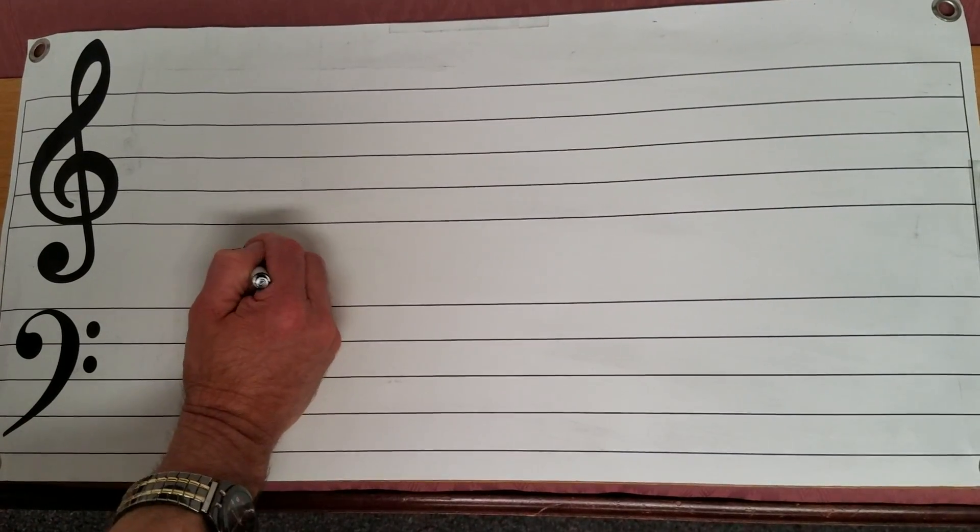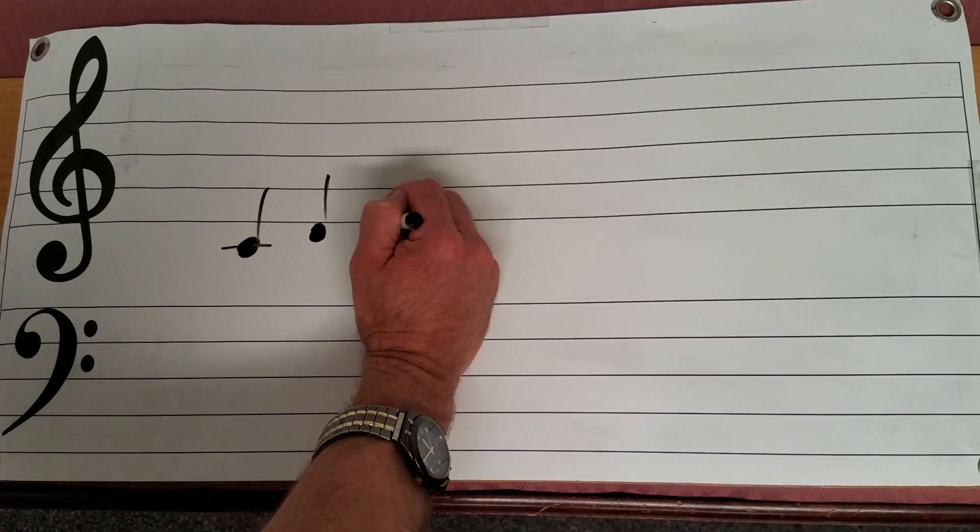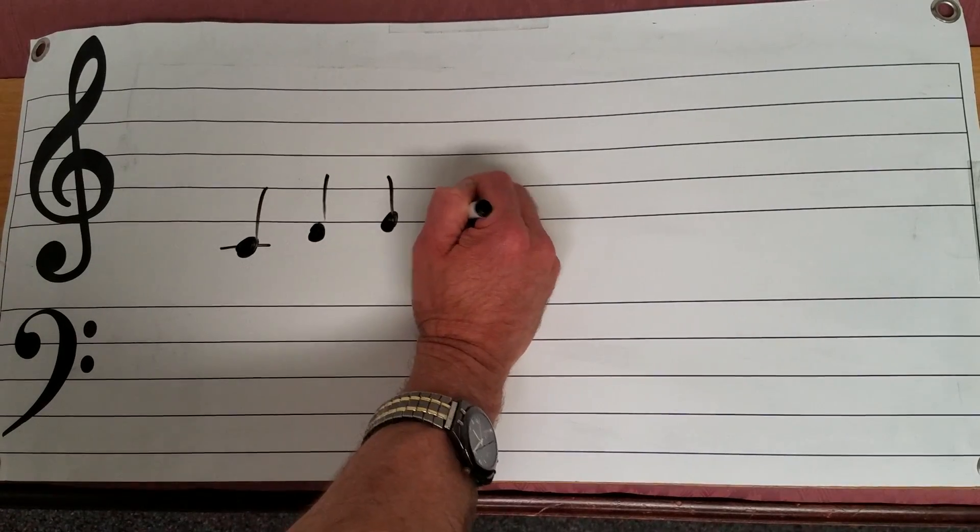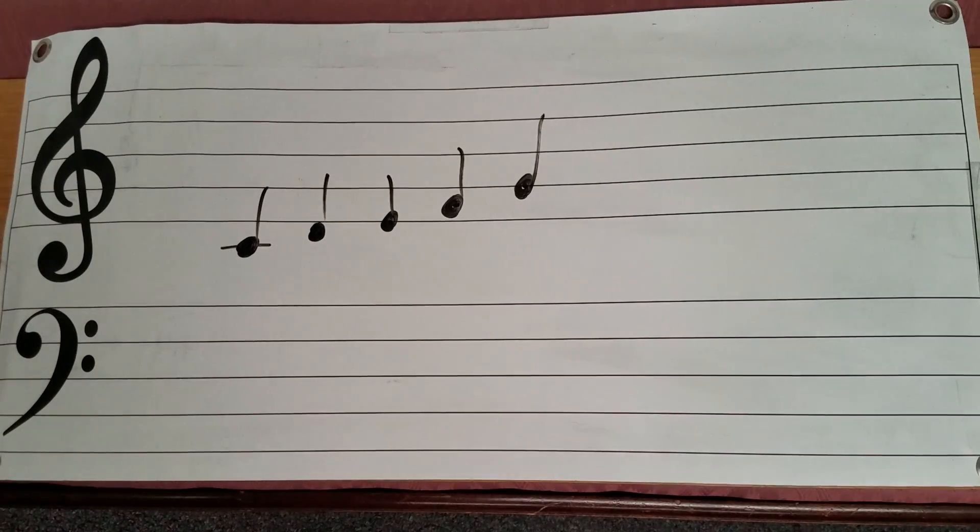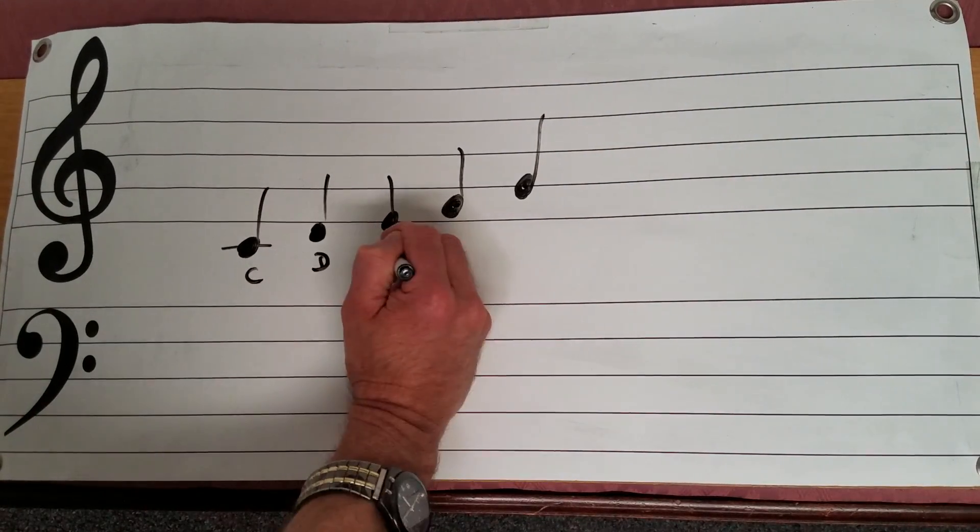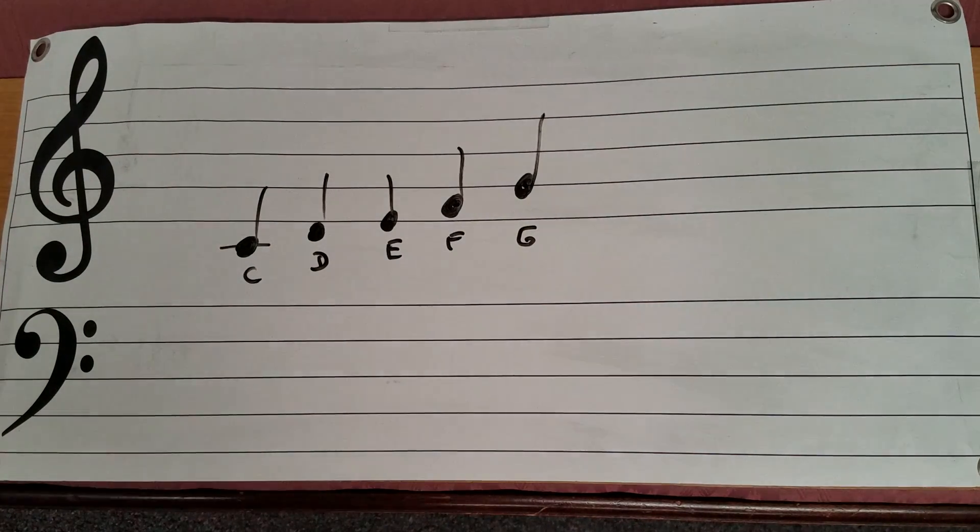Now as you recall earlier on we had our C, D, E, F, and G. All that we learned in the treble or the right hand clef and here we have it. I'll label them once again. These you should now be very familiar with and if you would like you can always go back and look at those earlier lessons.